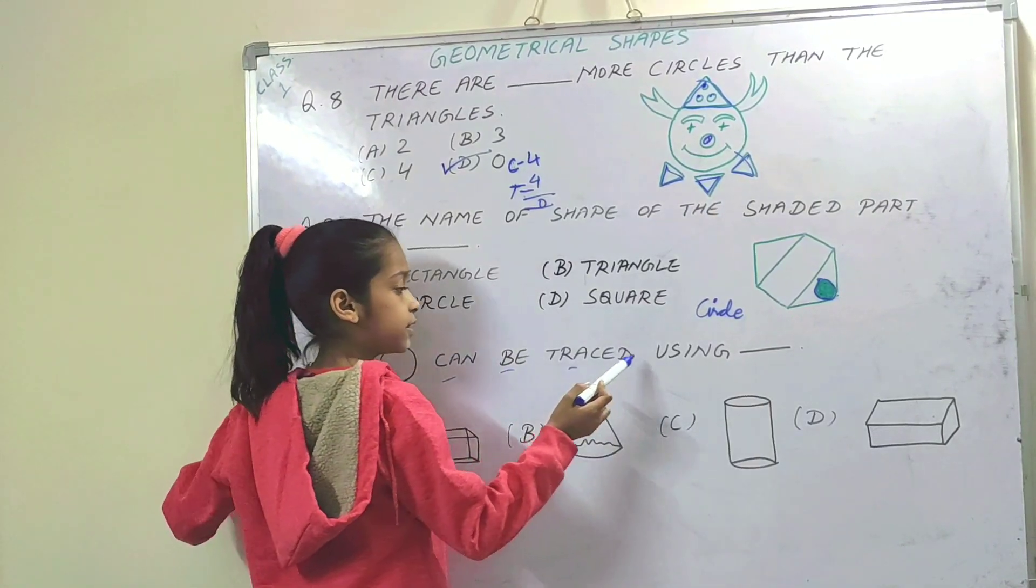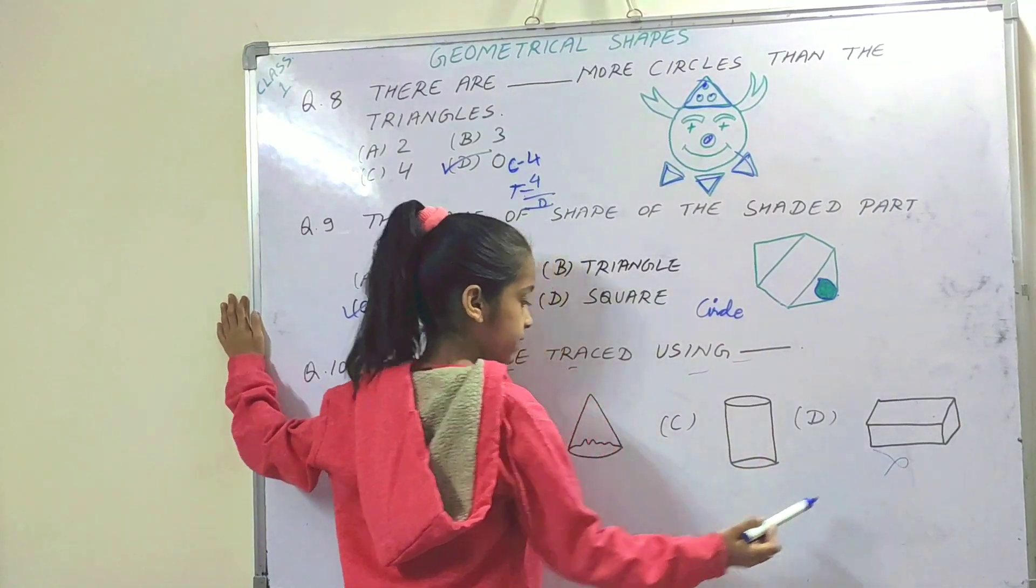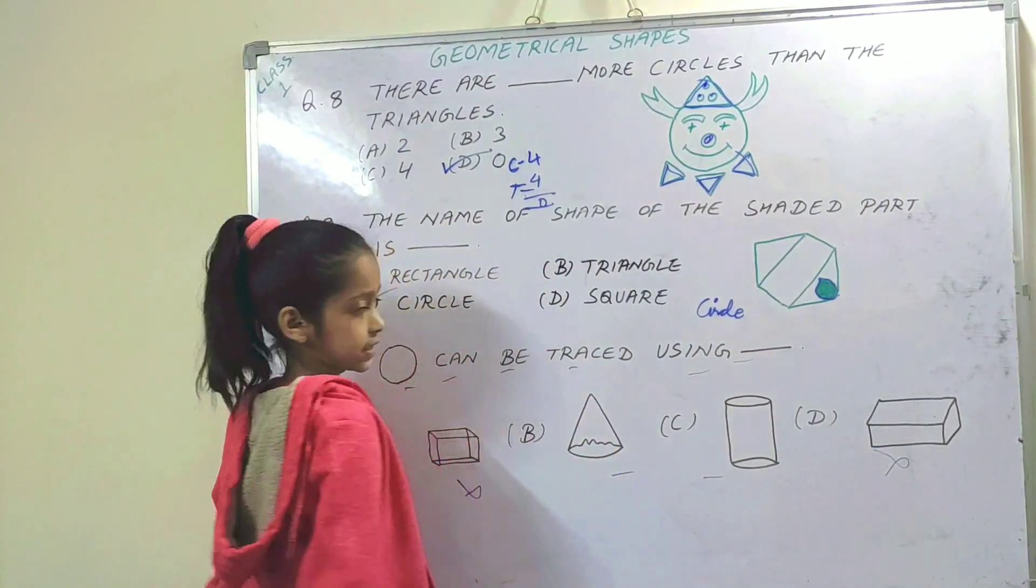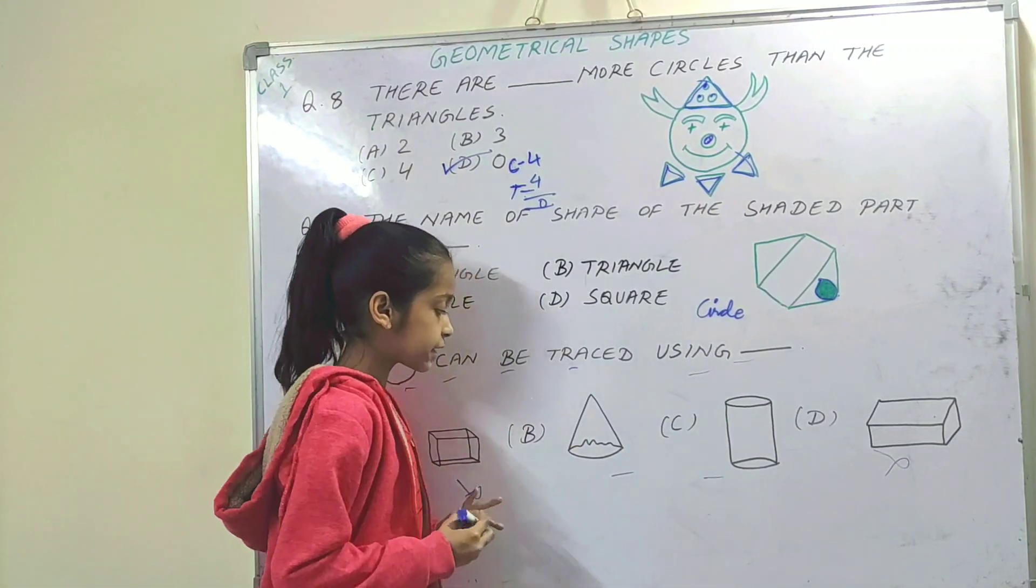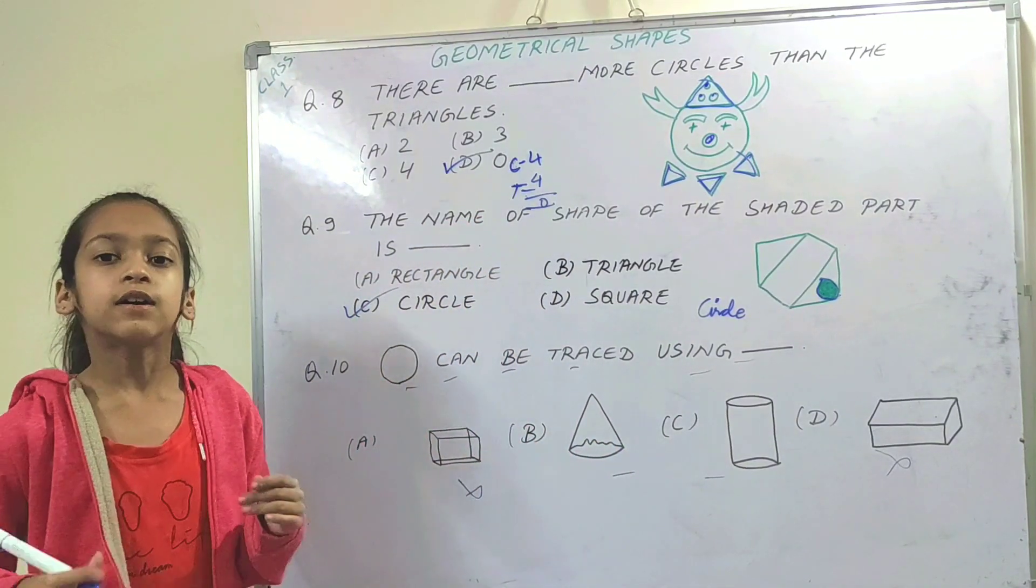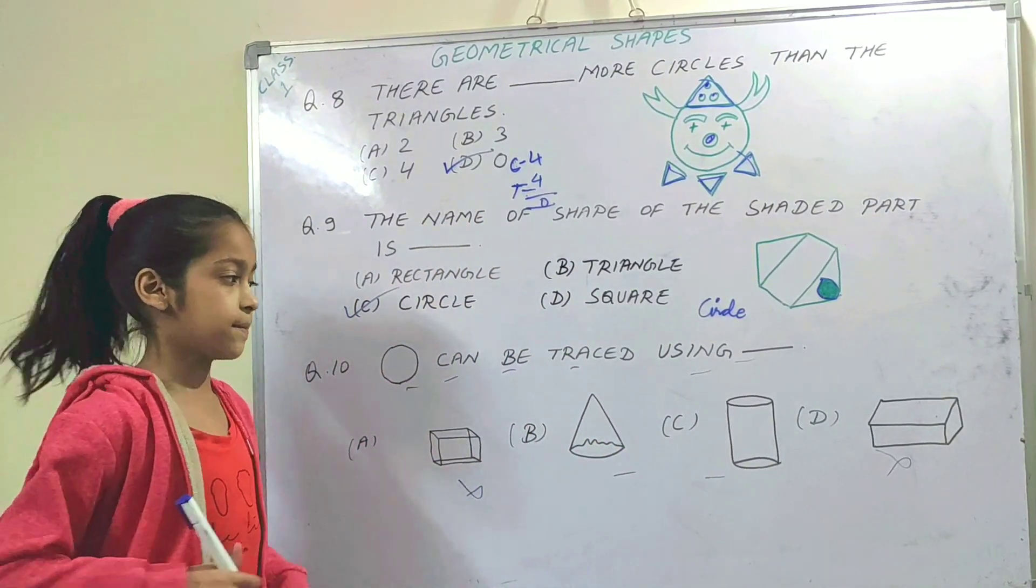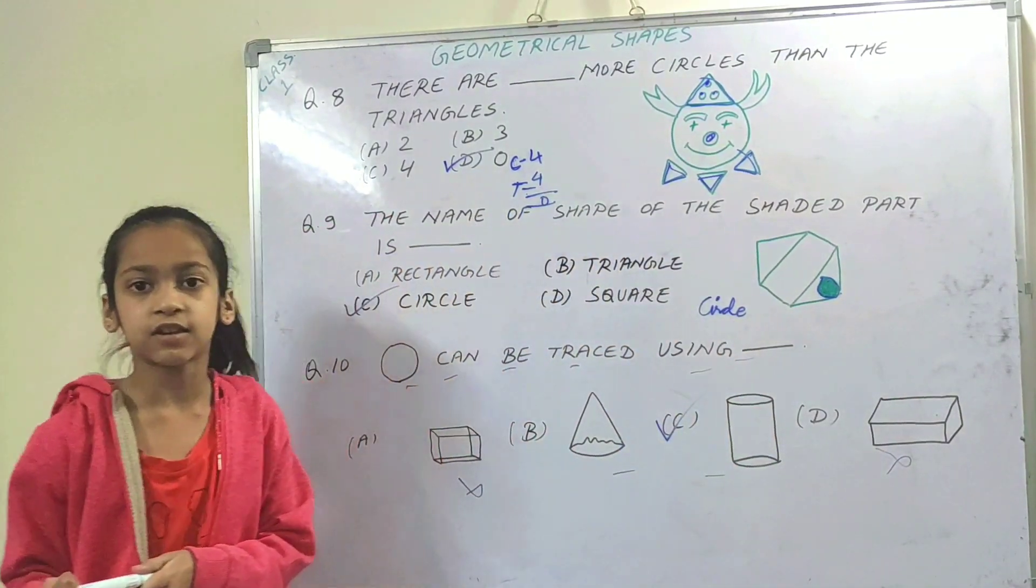Circle can be traced using dash. So we need to find what can trace a circle. Two options are correct here. So let's see. This is the right option.